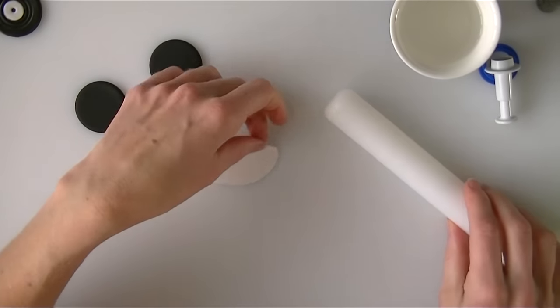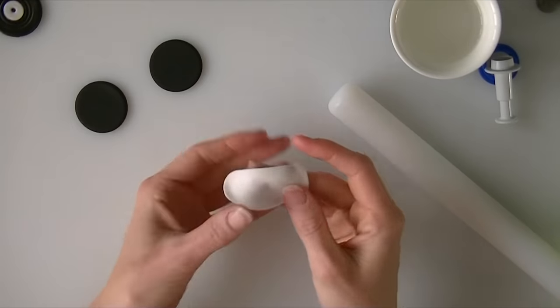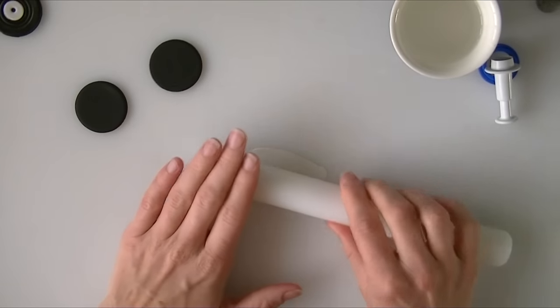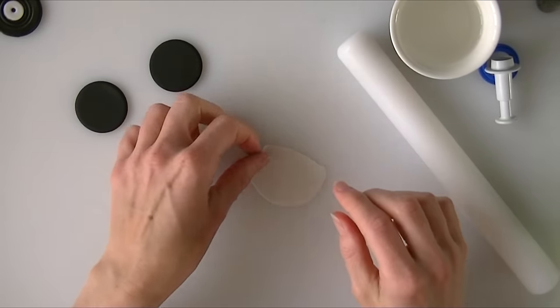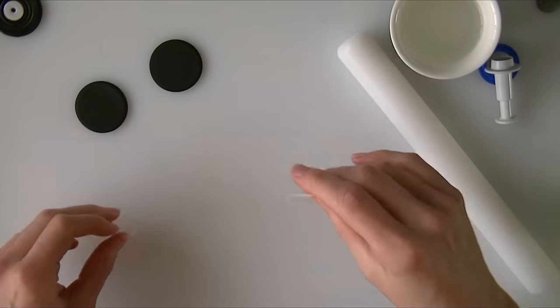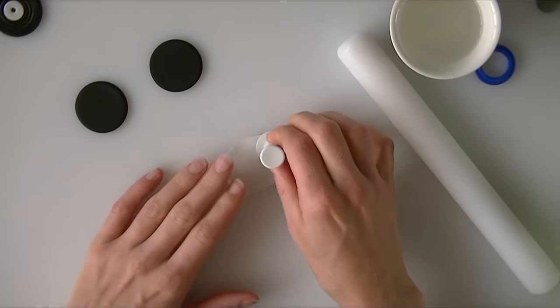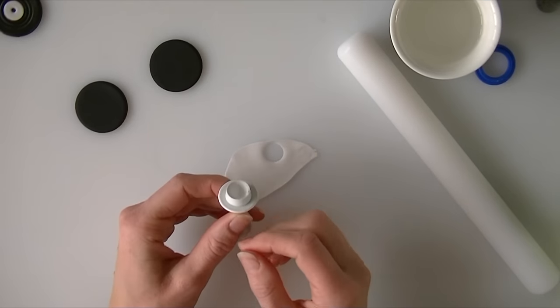So I am just going to roll it thin and I want to keep it nice and thin. I find it is easier to roll the modelling paste thinner than it is the fondant. And I have just got a smaller circle cutter now where we are just going to cut a small circle from.